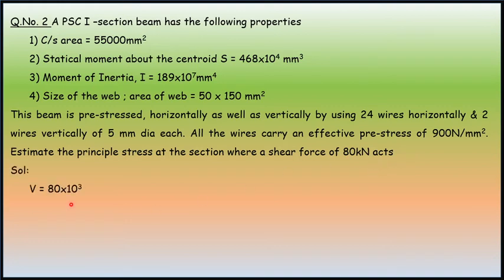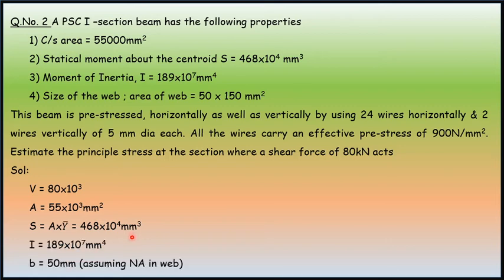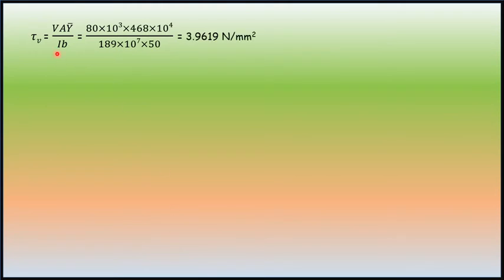Solution. V is 80 kN shear force. Area is 55 into 10 raised to 3 mm square. Statical moment becomes A times ybar, 468 into 10 raised to 4 mm raised to cube. I is moment of inertia. b is 50mm. Assuming neutral axis in web, we are going to proceed.